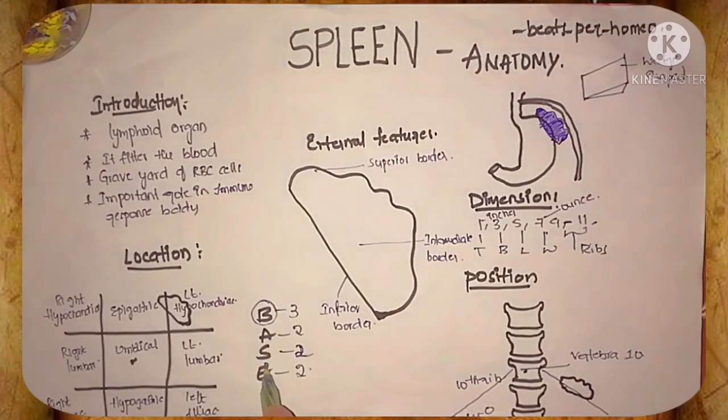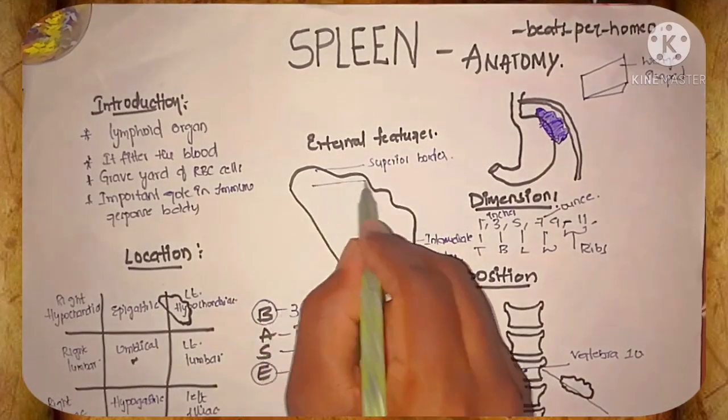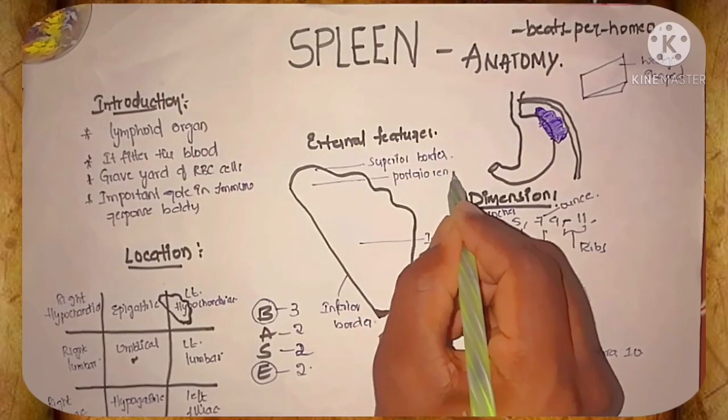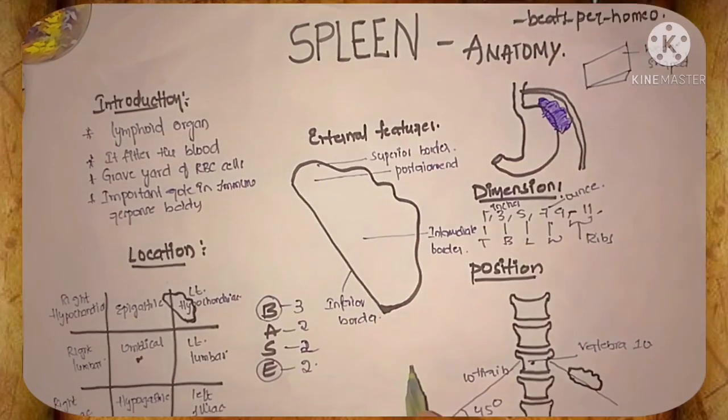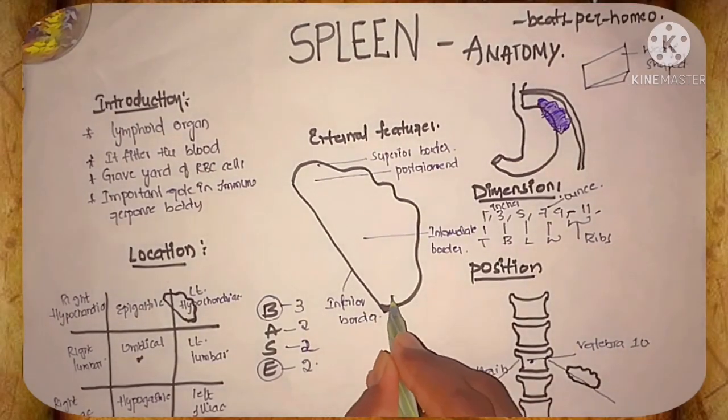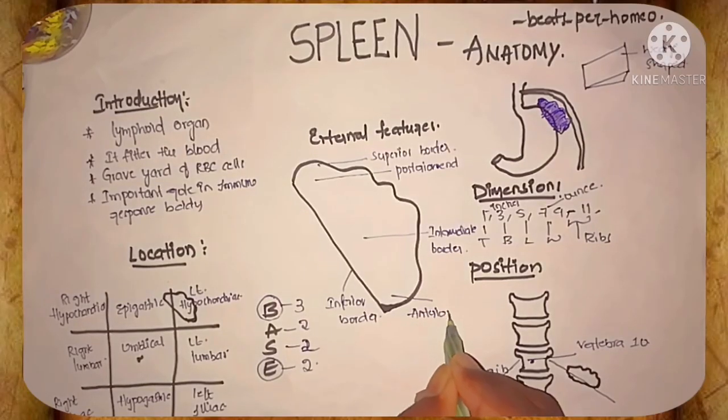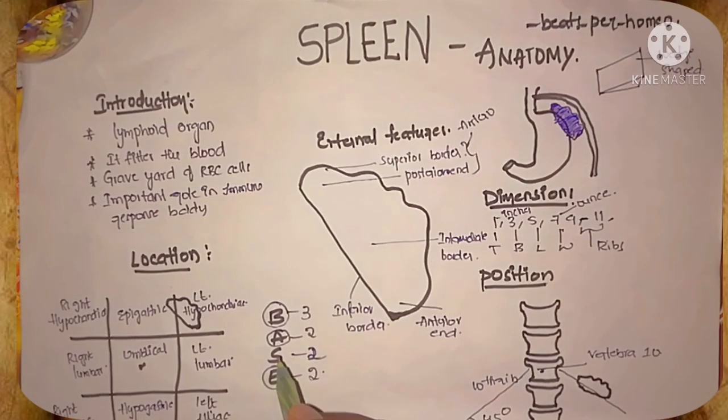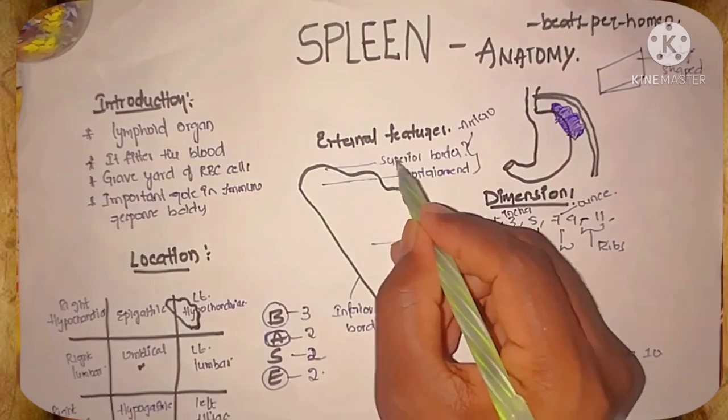E for ends in the word BASE: posterior end and anterior end. A for angles, two angles: anterosuperior angle and posterior basal angle.